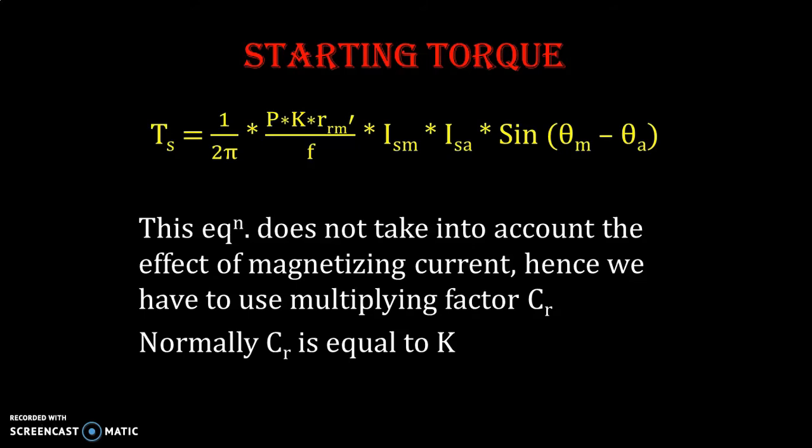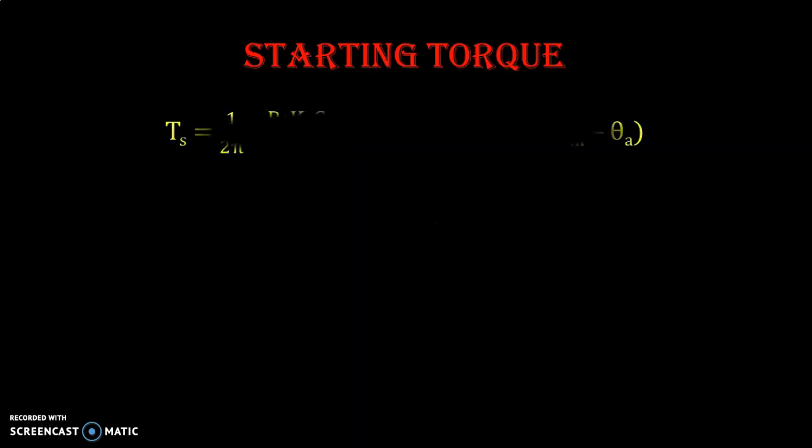CR is a correction factor that accounts for magnetizing current. Introducing this multiplication factor CR, our equation becomes: TS = (1 / 2π) × P × K × CR × RRM' / F × ISM × ISA × sin(θm − θa).